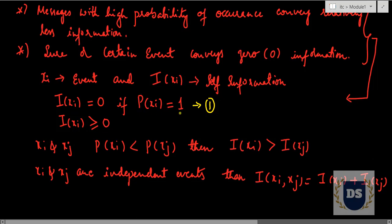Observation two: self-information cannot be negative — it can be greater than or equal to 0. Observation three: if there are two events x_i and x_j such that the probability of occurrence of x_j is greater than that of x_i, then the self-information of the rarely occurring event is greater than that of the event occurring with higher probability.